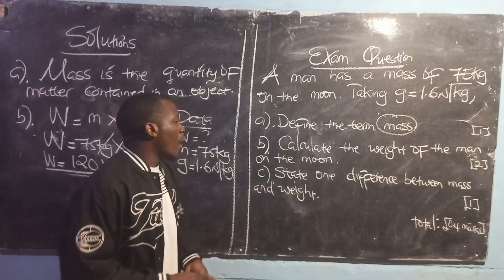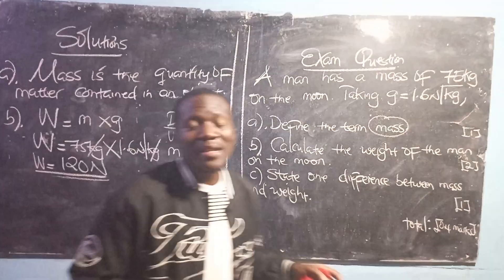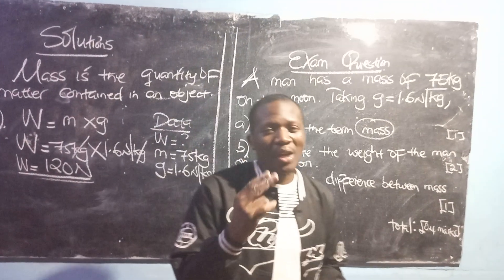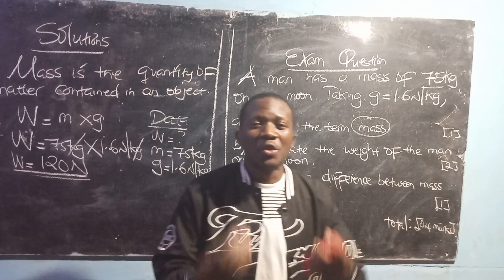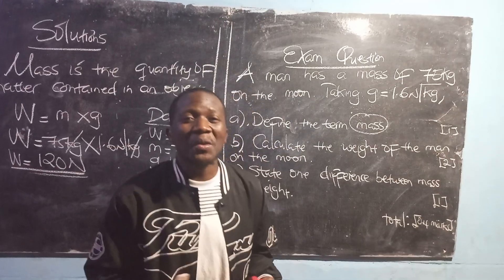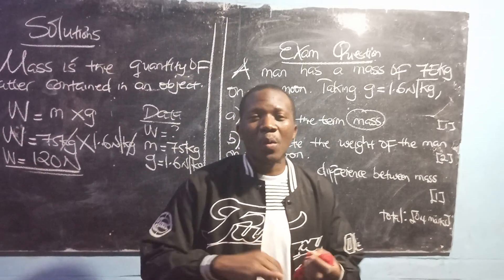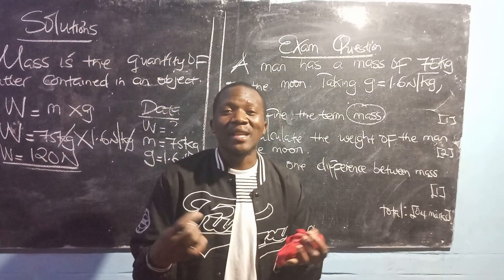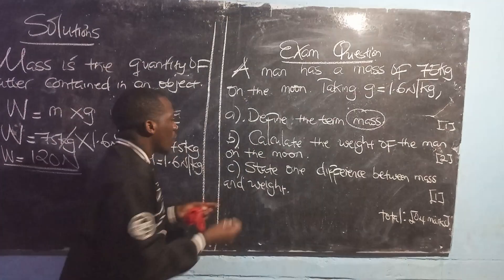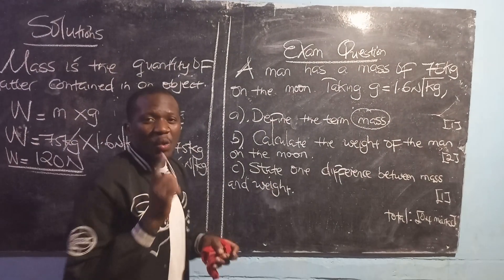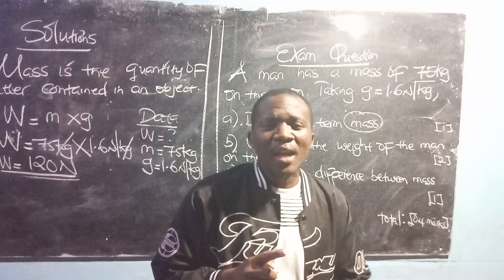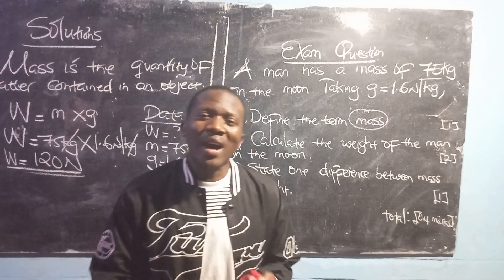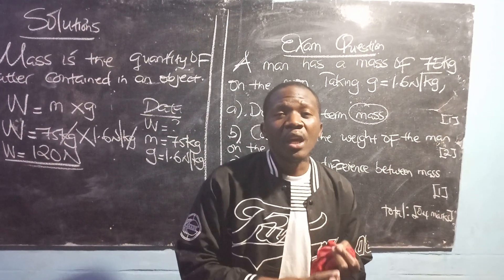Part C: state one difference between mass and weight. When drawing a comparison between two things, we are supposed to use words such as 'while' or 'but.' When we talk about mass and weight, we can start with units: mass is given in kilograms, whereas weight is given in newtons.